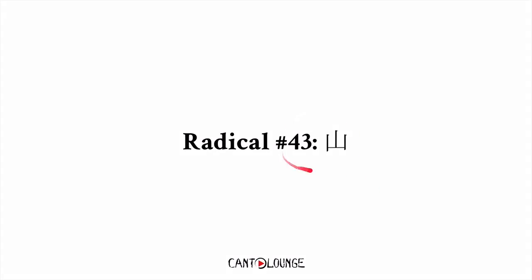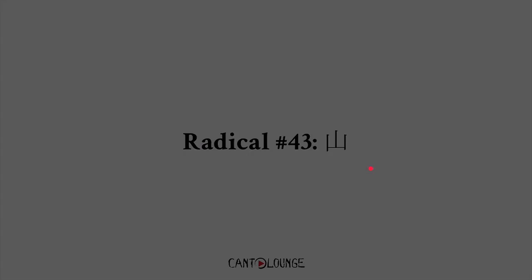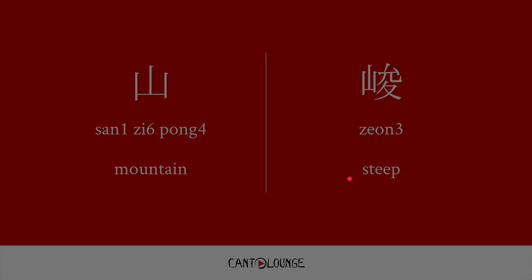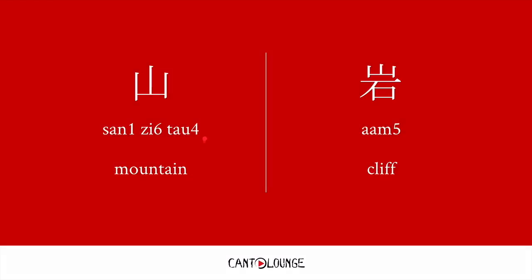Number 43: 山, meaning mountain. 山字旁, if it's on the side — for example, 陡, meaning steep. 山字頭, on the top — for example, 岩, meaning cliff.